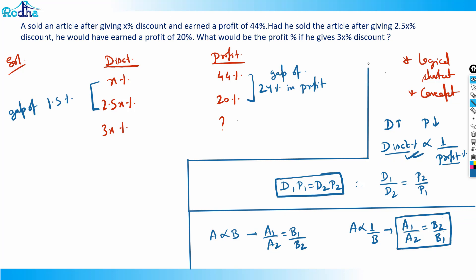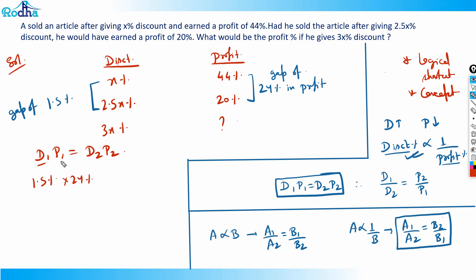Let's apply this funda directly: d1 times p1 equals d2 times p2. An extra discount of 1.5x percent creates a profit gap of 24 percent. So d1 is 1.5x and p1 is 24. Now d2 is 3x — the new discount — and we need to find p2.